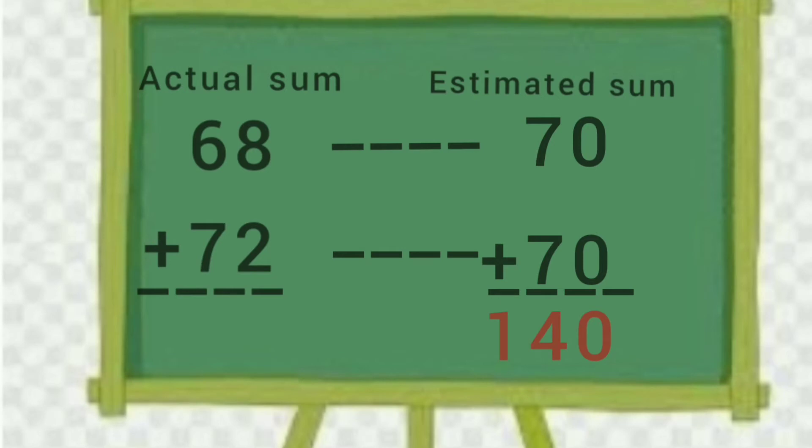Now add both of these numbers. 70 plus 70 will be 140. Now find out the actual sum. The actual sum will be also 140. 68 plus 72 is equal to 140.